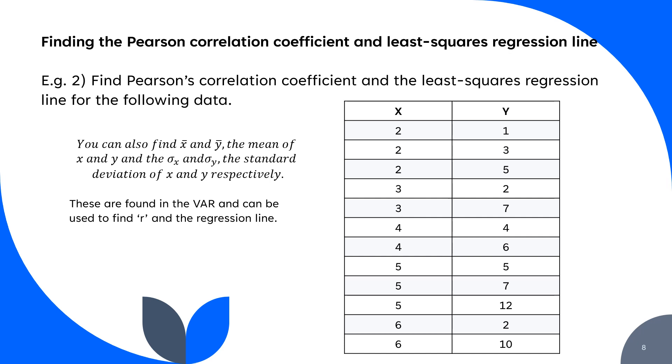You can also find the x bar and y bar, that's the mean of x and y, and the standard deviation. These are found in the VAR section, just like one of our previous videos. You need to go to the VAR, not the regression section. It can be used to find the R if needed, but we tend to use the easy method, which is entering on your calculator and going to the regression section.